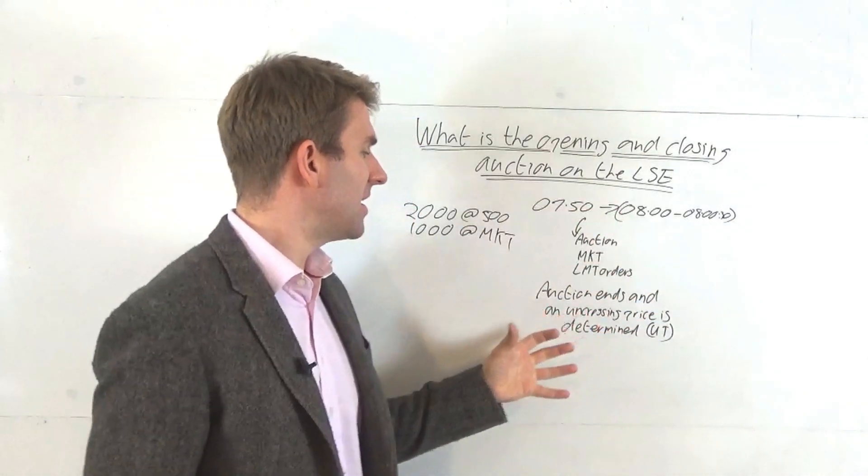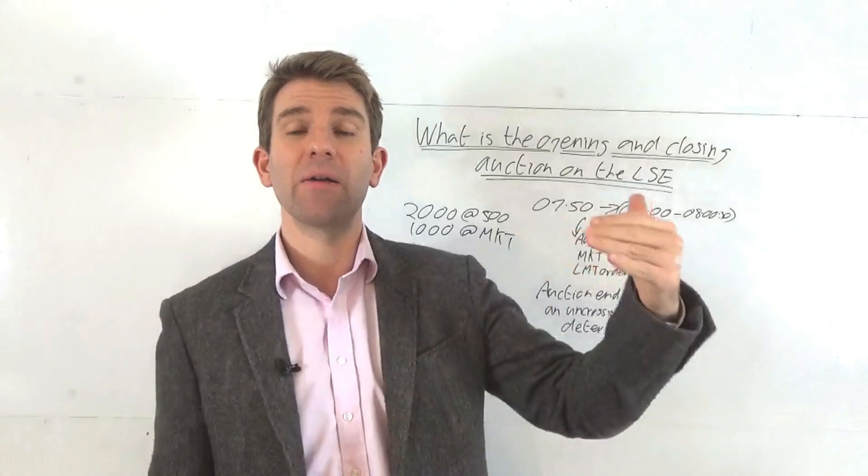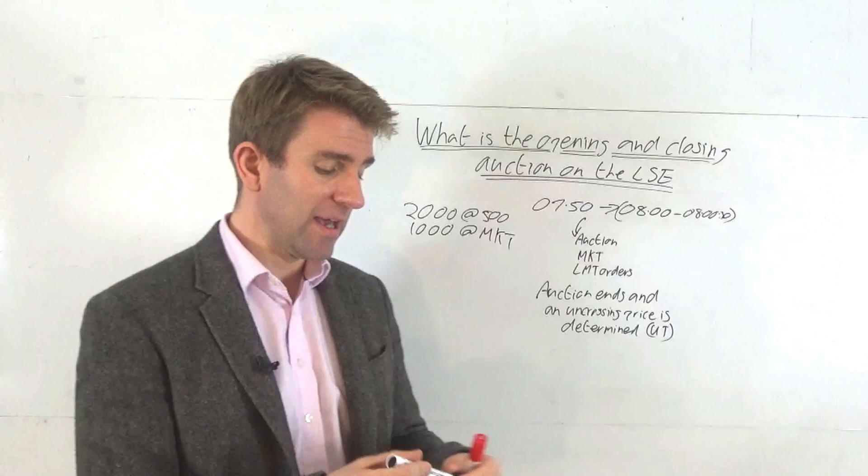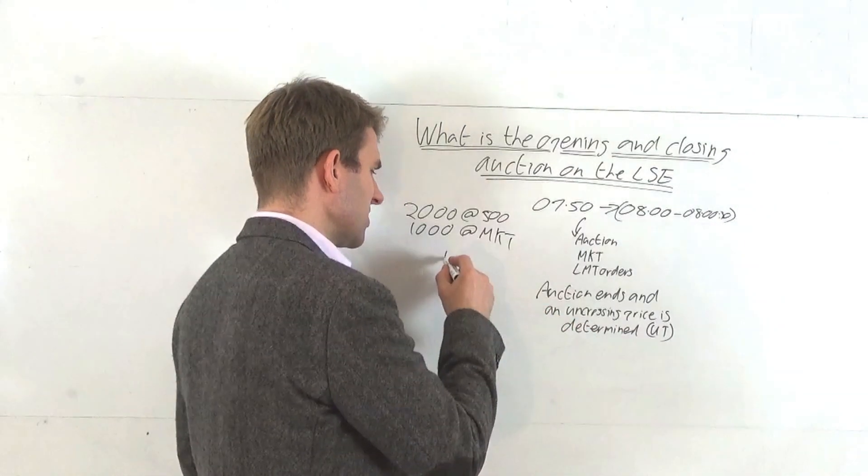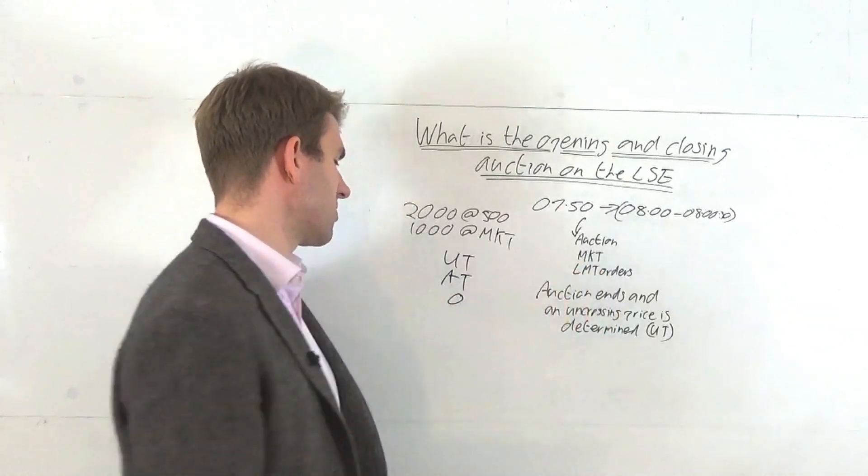When the auction ends, we get what's called an uncrossing price, marked as UT. If you're watching your time and sales or level 2, you'll see it as UT. You normally see UT, AT, or O - there's other ones as well.